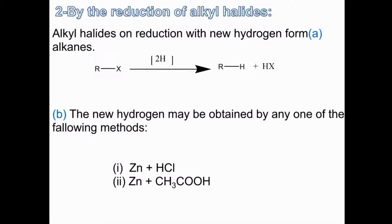Method two is by the reduction of alkyl halides. Alkyl halides on reduction with nascent hydrogen form alkanes: RX + 2H → RH. You can reduce alkyl halides and replace the X — where X means any halogen: fluorine, chlorine, bromine, or iodine — with hydrogen, so the product is RH. The nascent hydrogen may be obtained by any one of the following methods.